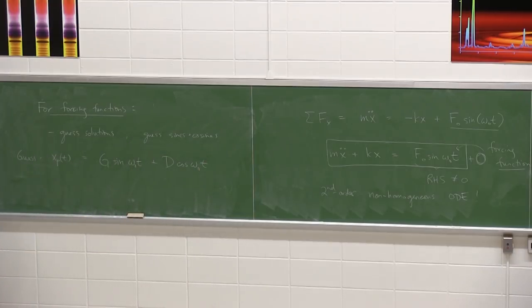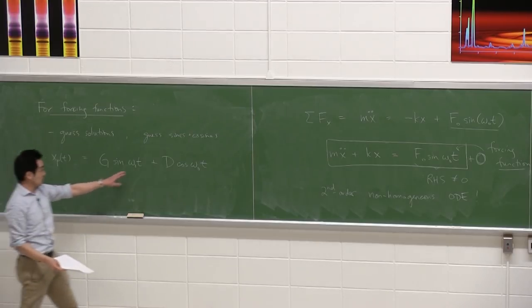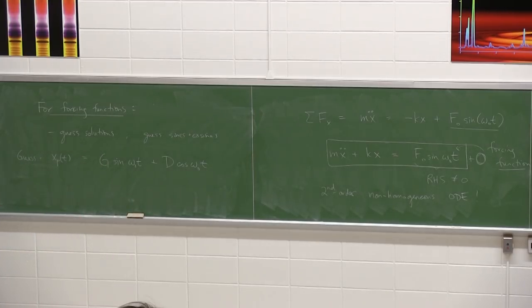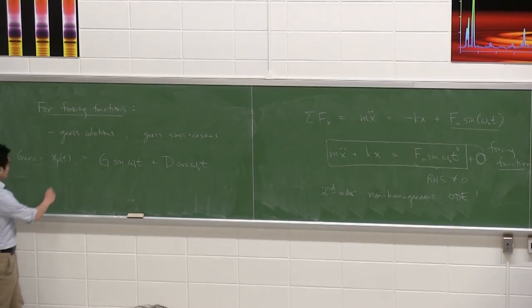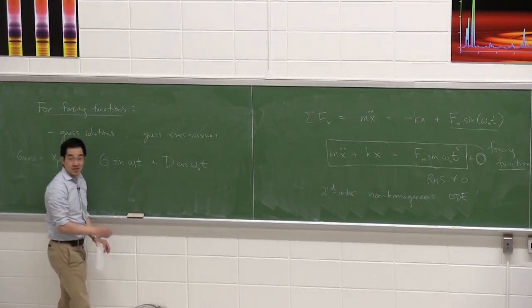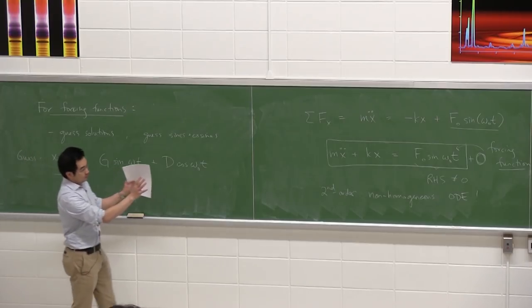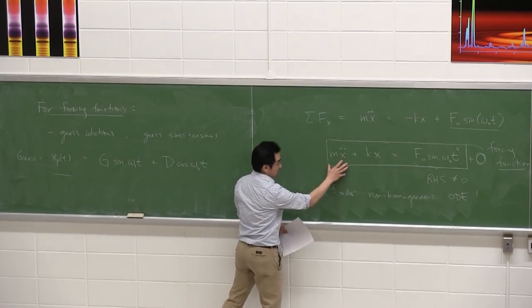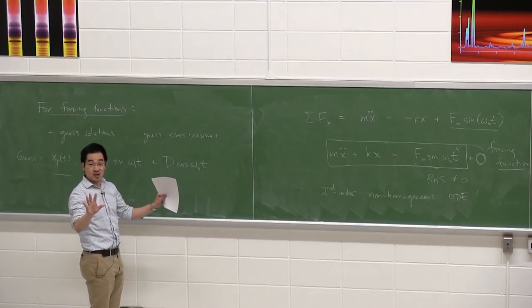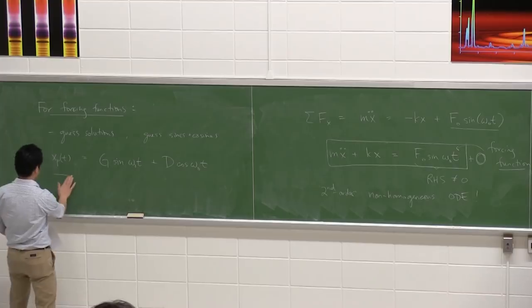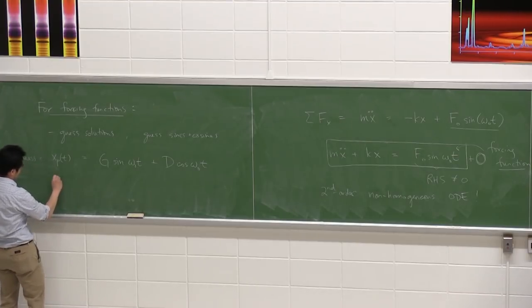The chance that this form will fit when plugged into the differential equation is very high. To prove the guess works and find G and D, we take the first and second derivatives of x_p, plug them into the left-hand side, then match the coefficients on both sides. Let's compute x_p dot: omega_0 * G * cos(omega_0 * t) minus omega_0 * D * sin(omega_0 * t).